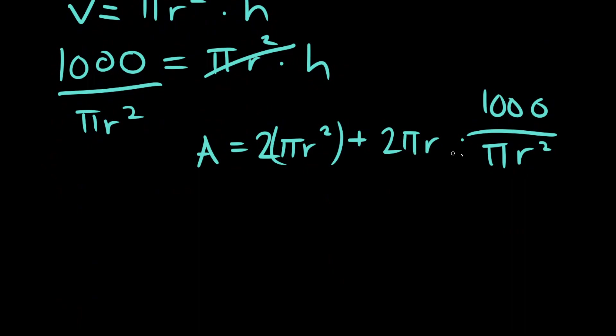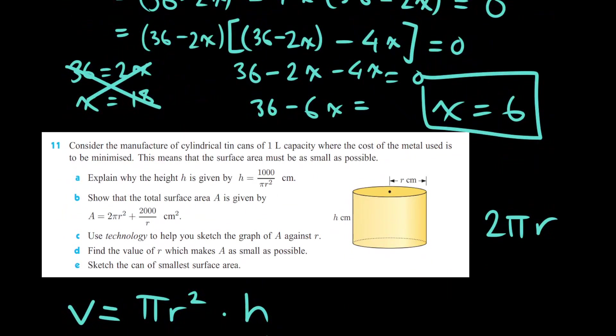And you'll notice that there's some common terms here. Pi will cancel with this and r will cancel with this squared. You'll get that 2 times 1,000. Let's expand this out. 2 pi r squared plus 2,000 over r.